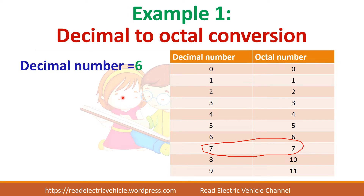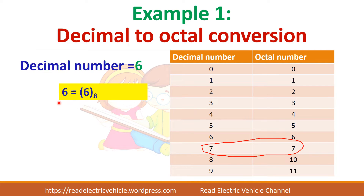So for any decimal number from 0 to 7, it is equal to the octal number. There is nothing to convert — just write the octal number as 6. Decimal 6 is equal to octal 6.